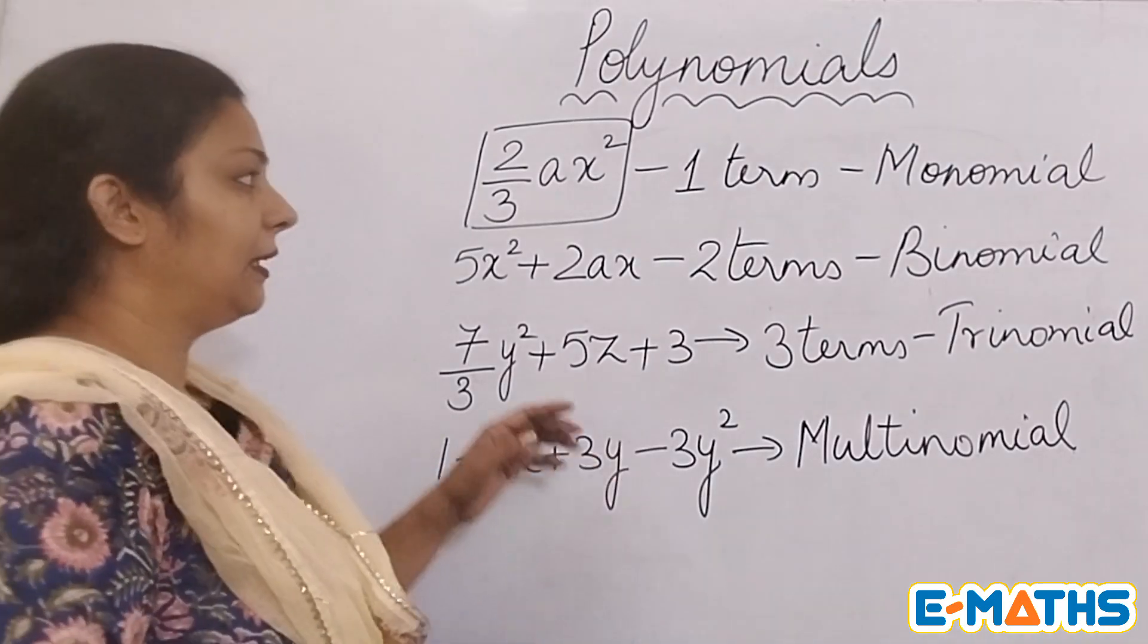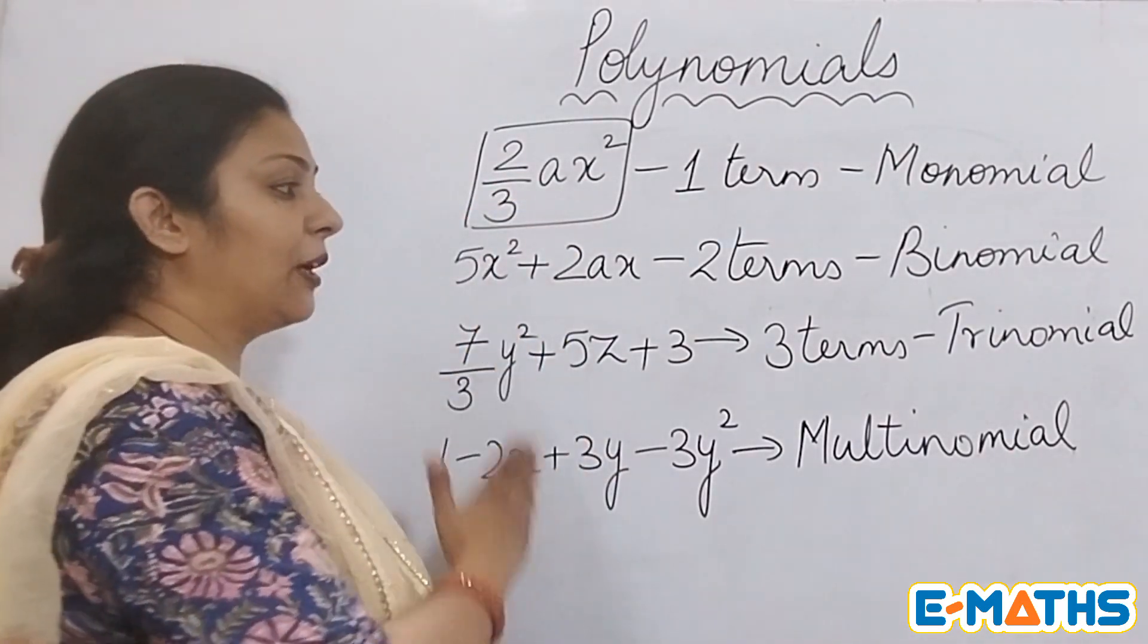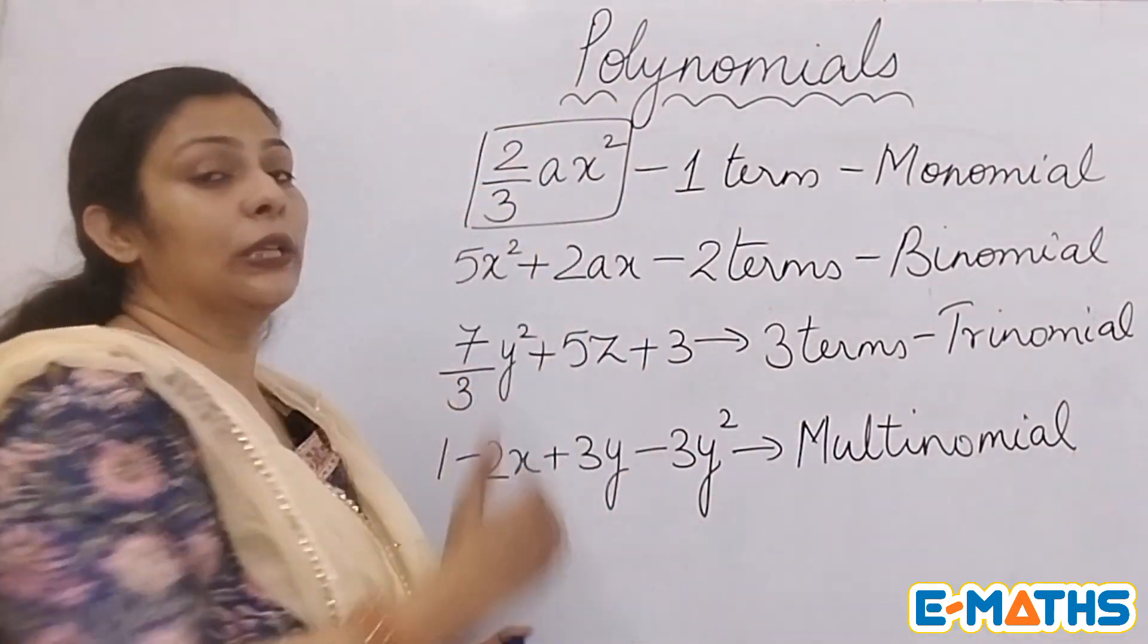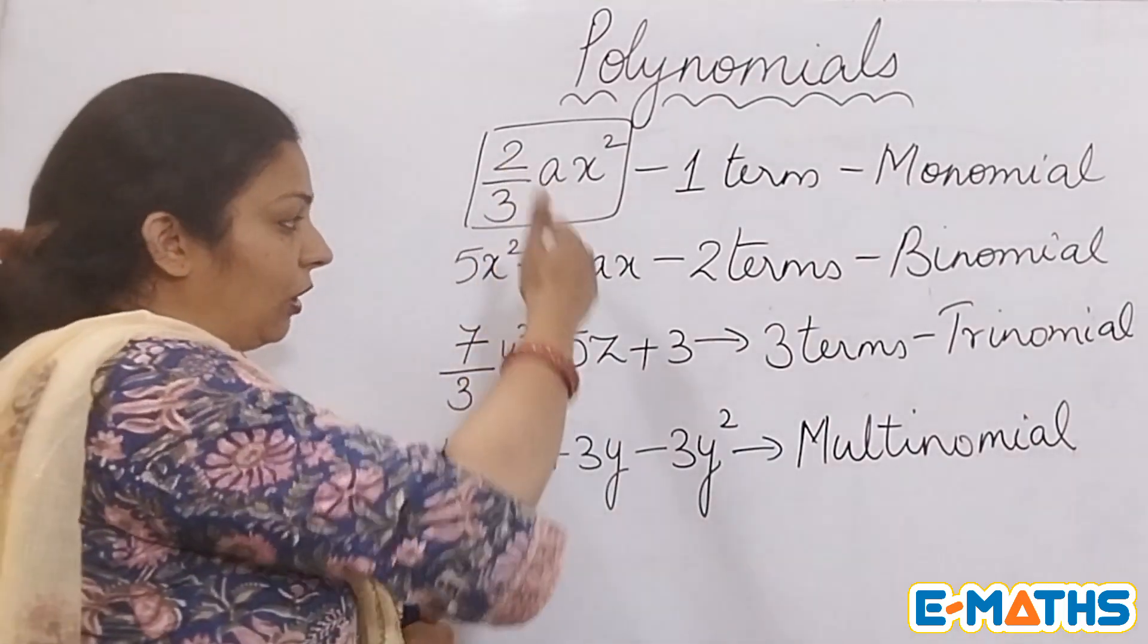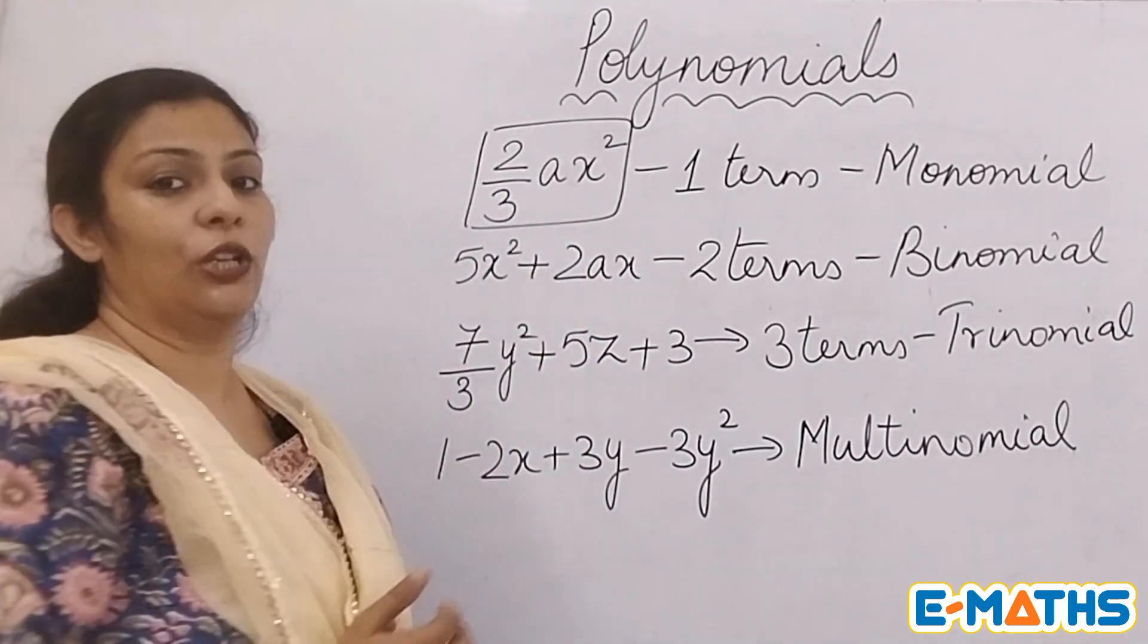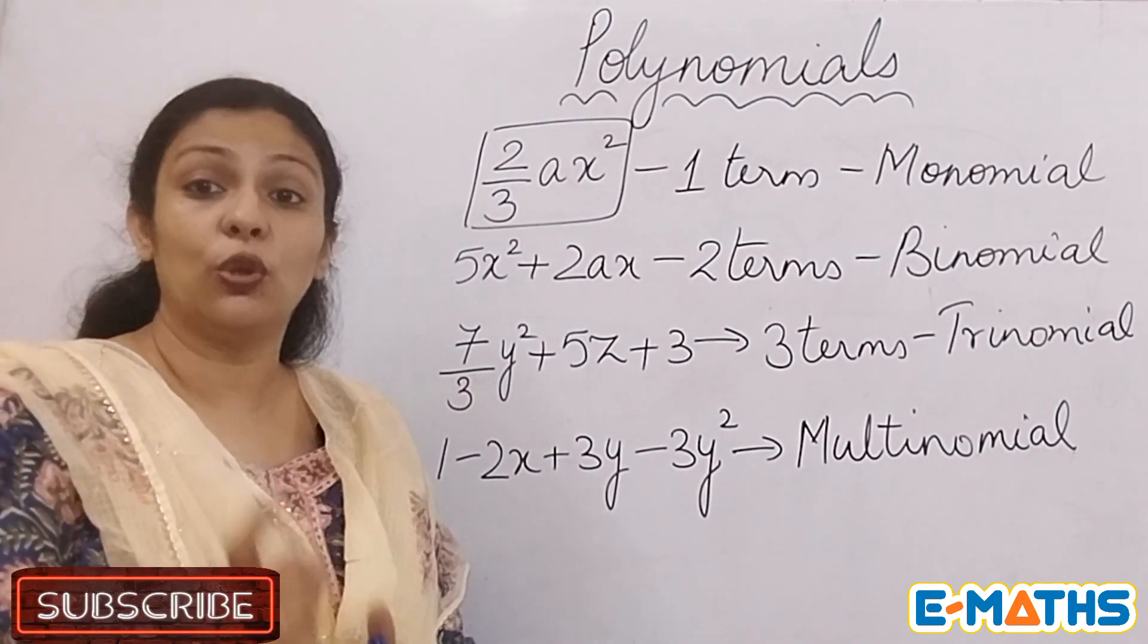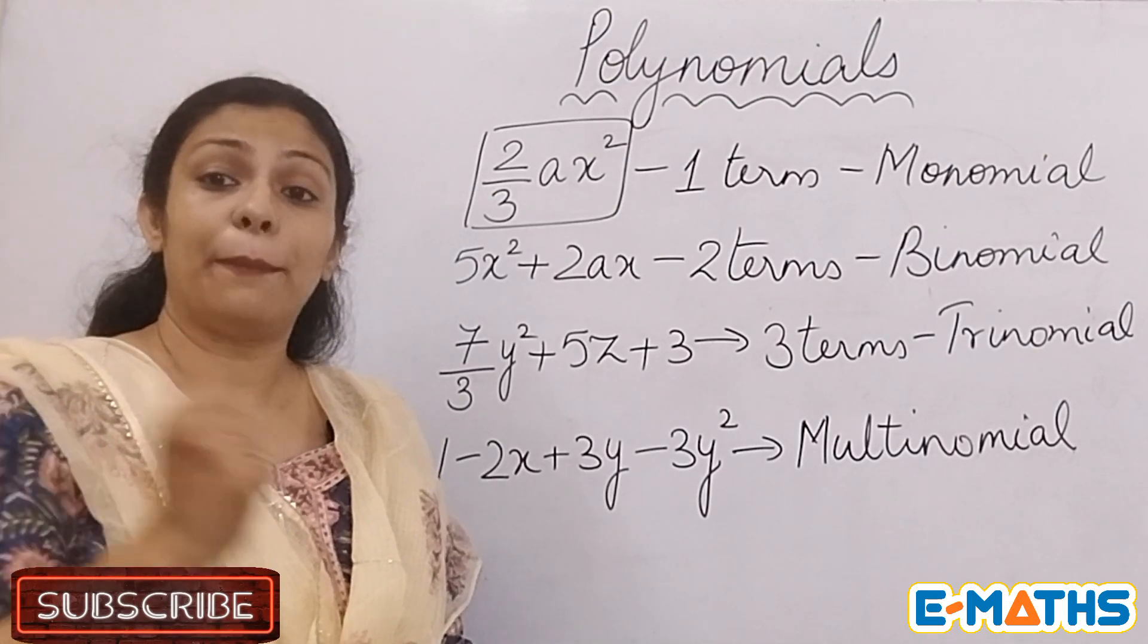Similarly, all these expressions, whether it's a monomial, binomial, trinomial, or multinomial, these all come under polynomials. So we can say that all these expressions are polynomials. Now I'll focus on those expressions which remain an expression but not a polynomial.